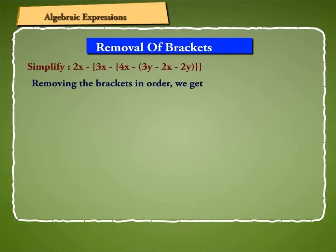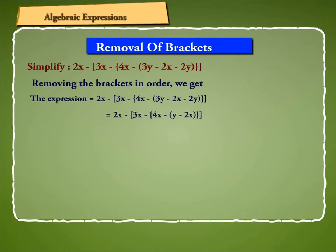Removing the brackets in order, we get the expression equal to 2x minus 3x minus 4x minus 3y minus 2x minus 2y, which simplifies to 2x minus 3x minus 4x minus y minus 2x. Now first we remove the round brackets. We get 2x minus 3x minus 4x minus y plus 2x.